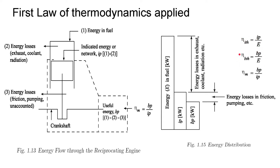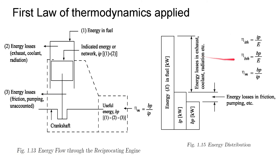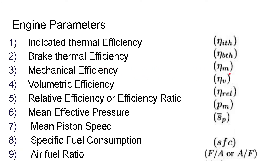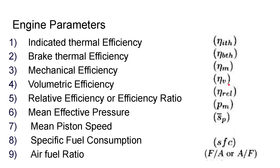eta_BTH will be roughly 5–10% lower than eta_ITH. There is a list of engine parameters to evaluate performance. The basic ones are: indicated thermal efficiency eta_ITH, brake thermal efficiency eta_BTH, and mechanical efficiency eta_M. eta_M can also be evaluated as the ratio eta_BTH / eta_ITH, since the denominator is common. Then there is volumetric efficiency eta_V and relative efficiency eta_REL.